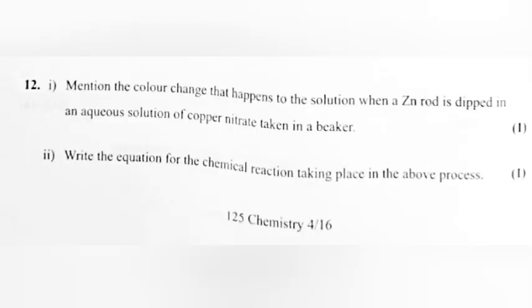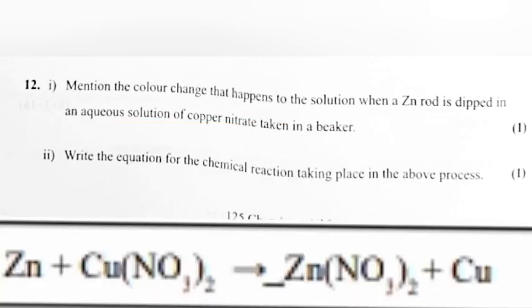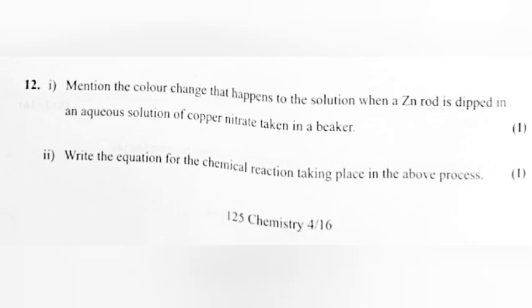Question 12: 1. Mention the color change that happens to the solution when a zinc rod is dipped in an aqueous solution of copper nitrate taken in a beaker. 2. Write the equation for the chemical reaction taking place in the above process. Answer: 1. Blue color fades or changes to colorless. 2. Zn plus Cu(NO3)2 gives Zn(NO3)2 plus Cu.